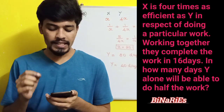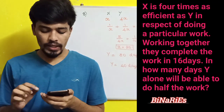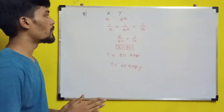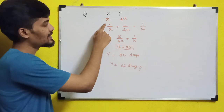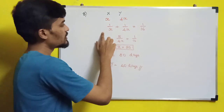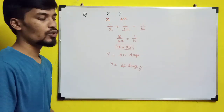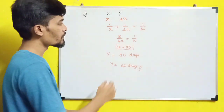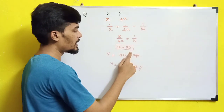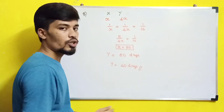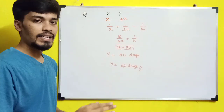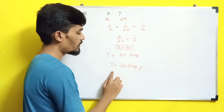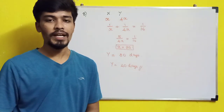The next question: x is four times as efficient as y. Working together they complete work in 16 days. In how many days will y alone do half the work? Let y's rate = 1/y per day, then x's rate = 4/y per day (since x is 4× efficient). Together: 1/x + 1/(4x) = 1/16, giving 5/(4x) = 1/16, so x = 20 days and y = 80 days. Since they ask for half the work, y takes 80/2 = 40 days.